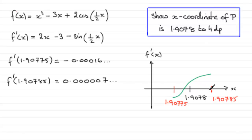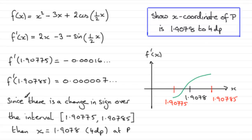in this interval, correct to four decimal places, it must be 1.9078. So what we can say is that since there is a change in sign over the interval 1.90775 to 1.90785, then x equals 1.9078 to four decimal places at P.